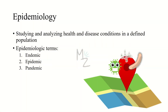Epidemiology is a study and analysis of health and disease conditions in a defined population. Don't get confused with the word 'defined' and 'population' — you'll get to know why in a moment. The epidemiologic terms we'll cover are endemic, epidemic, and pandemic.